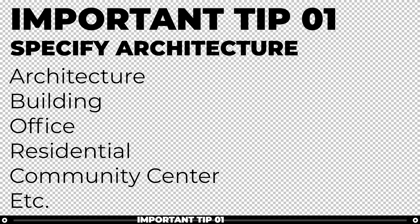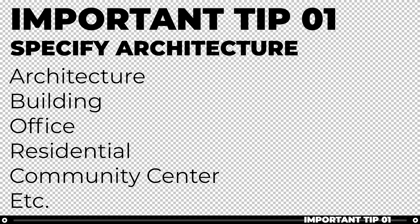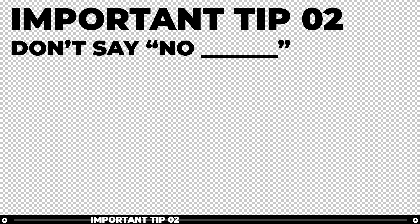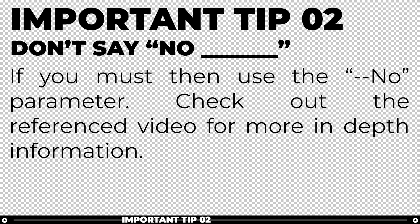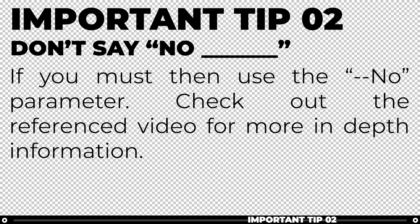I will typically end my prompt with either a type of building, the word architecture, or structure, so that Midjourney knows that I'm looking specifically for architecture. It's better to ask for what you want and not what you don't want. Use collective nouns like I mentioned before and don't rely on the phrase 'no columns' or 'no people.' There are specific parameters that you can use to remove things from your image, but that's what I'll go over in the video linked at the top left and in the description below.